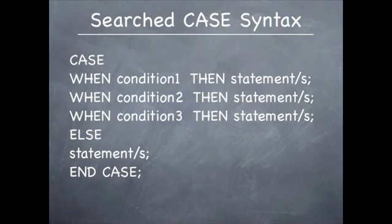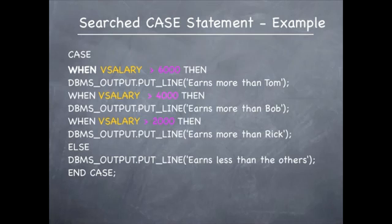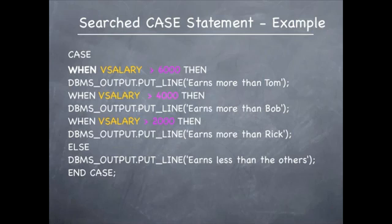On this slide is the use of the searched case statement. It goes: WHEN V_salary > 6000 THEN DBMS_OUTPUT.PUT_LINE('earns more than Tom'). If that condition is not true, the next check is WHEN V_salary > 4000 THEN DBMS_OUTPUT.PUT_LINE('earns more than Bob'). It continues with WHEN V_salary > 2000 THEN DBMS_OUTPUT.PUT_LINE('earns more than Rick'). If none of the conditions are true, the ELSE is executed, displaying 'earns less than the others'. The case is terminated by END CASE.